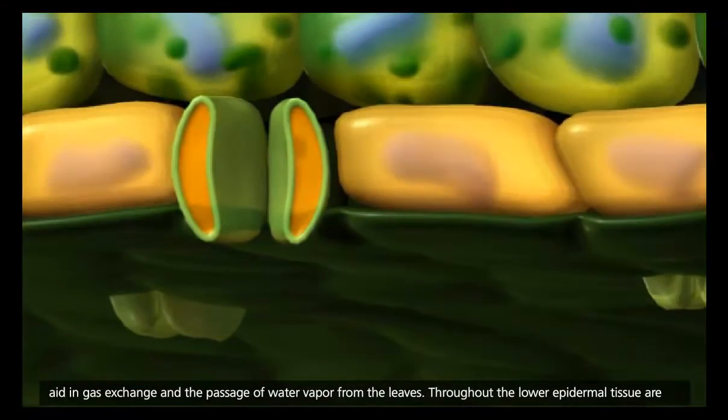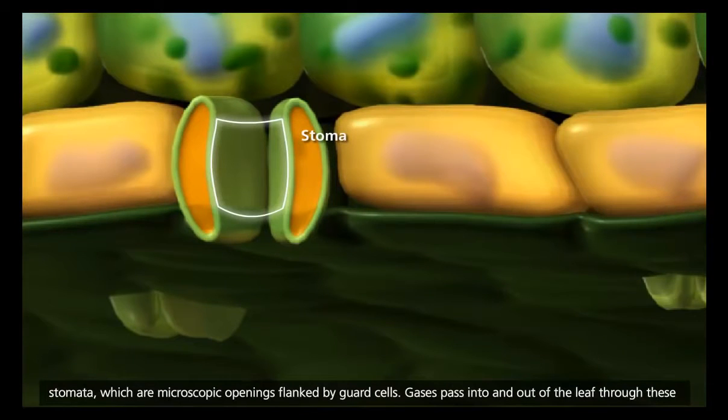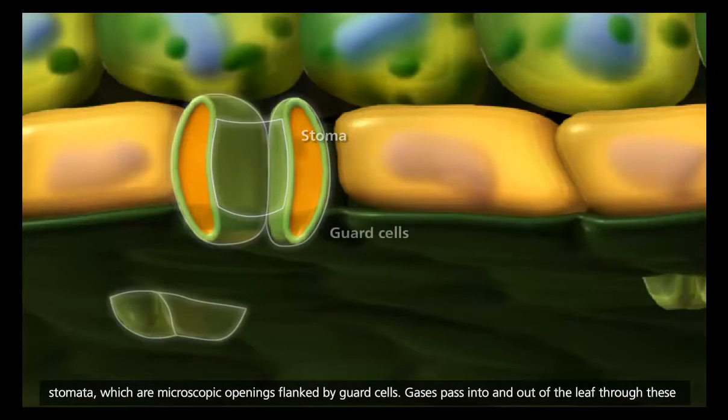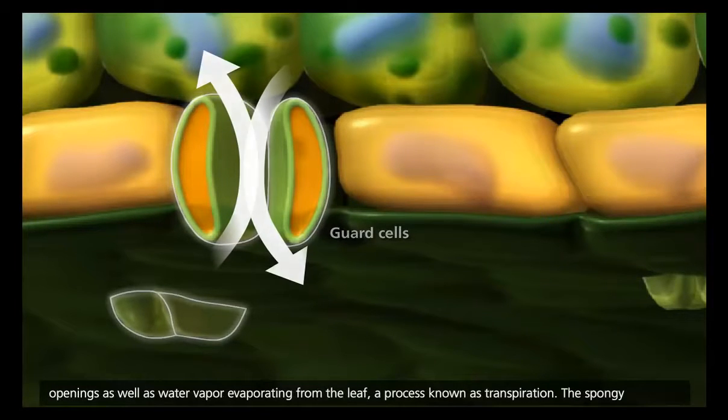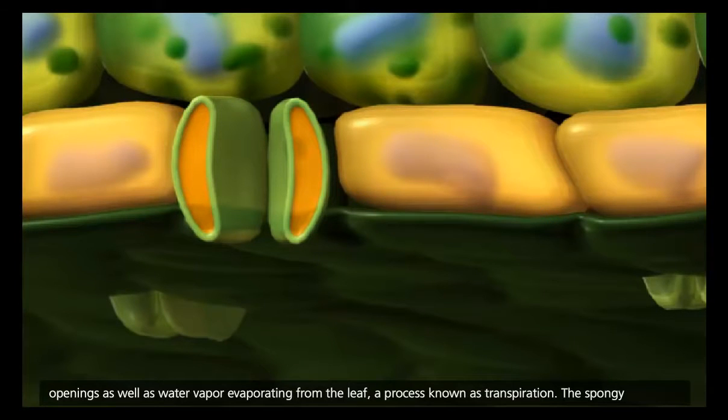Throughout the lower epidermal tissue are stomata, which are microscopic openings flanked by guard cells. Gases pass into and out of the leaf through these openings, as well as water vapor evaporating from the leaf, a process known as transpiration.